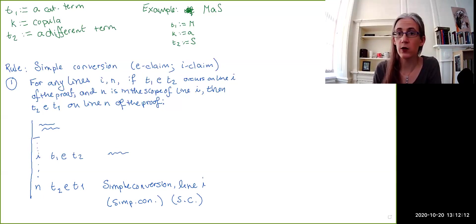The second version is going to look very similar, and so I'm not going to rewrite everything. I'm just going to kind of annotate where the other version differs. This one's the second version here. It says that for any lines i and n, if we have T1, i, T2 occurring on some line i of the proof, and if n is in the scope of line i, then, I just realized I forgot some words. Let's put some words in. So, here, then, we need to have, we can write T2, E, T1. Okay.